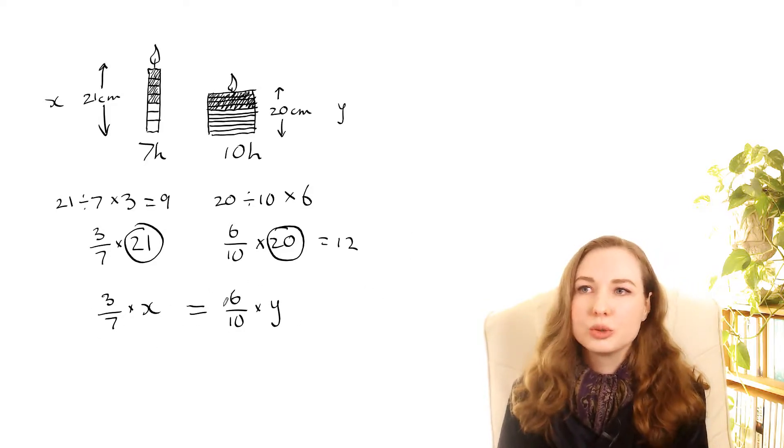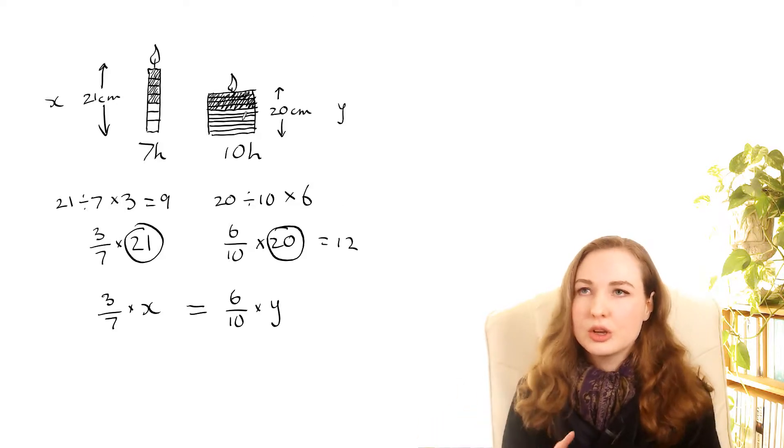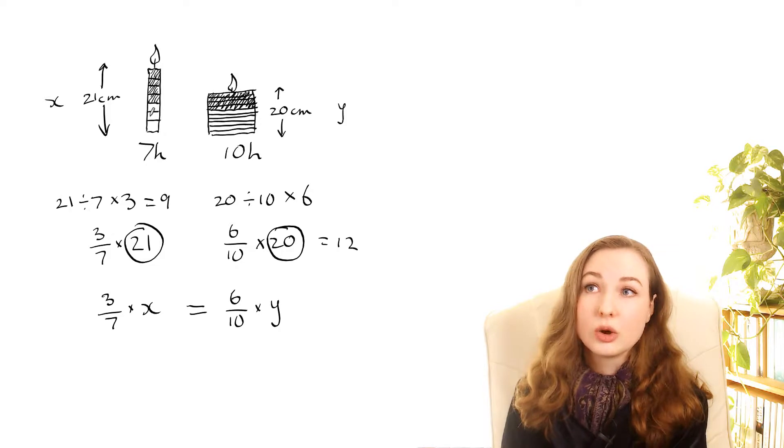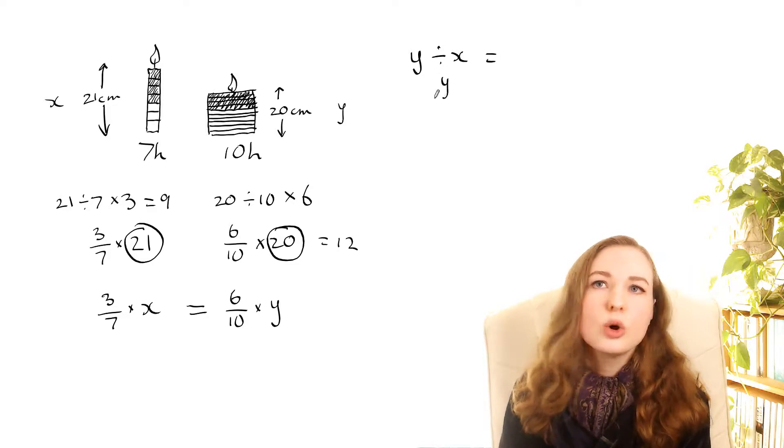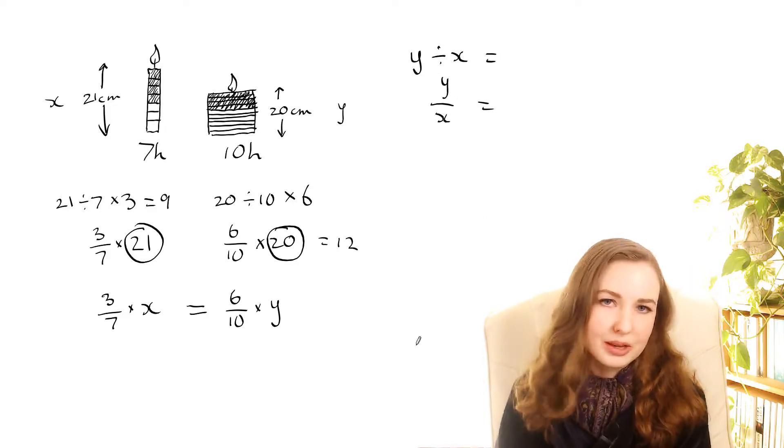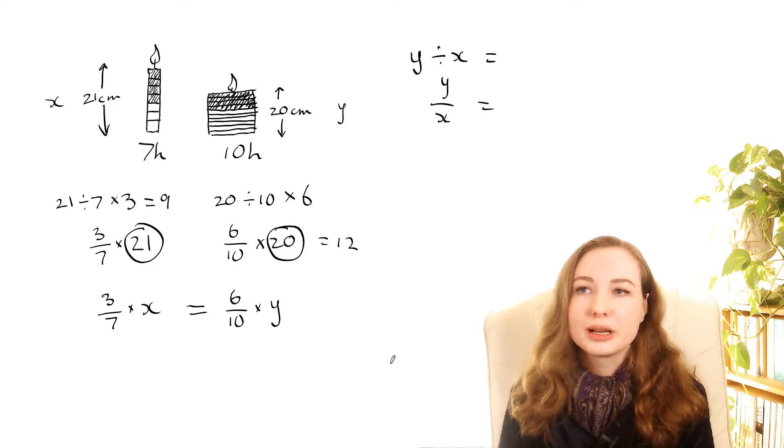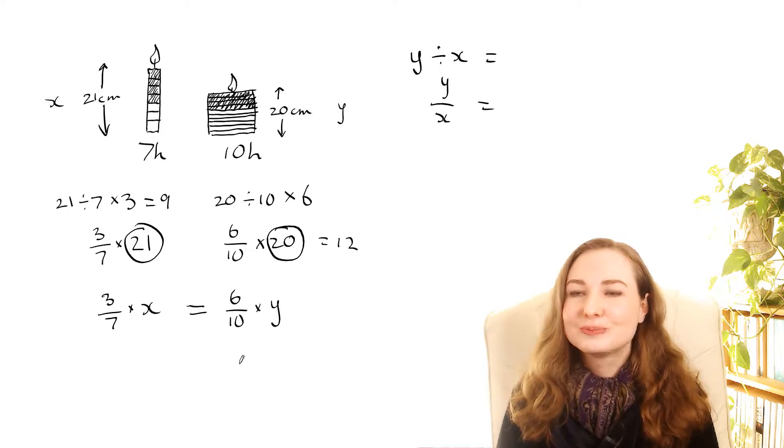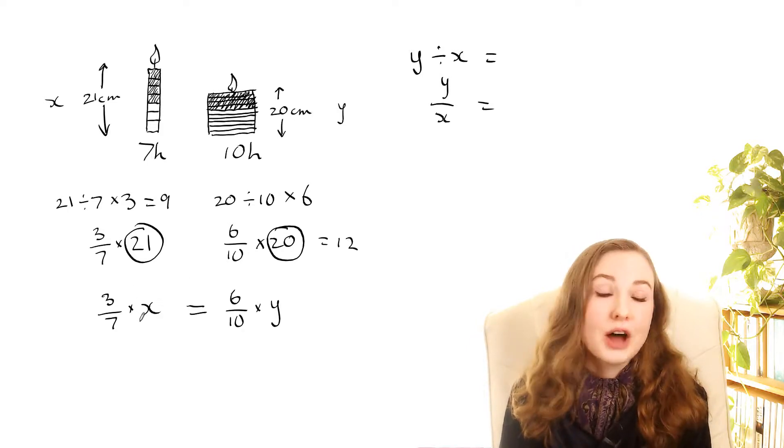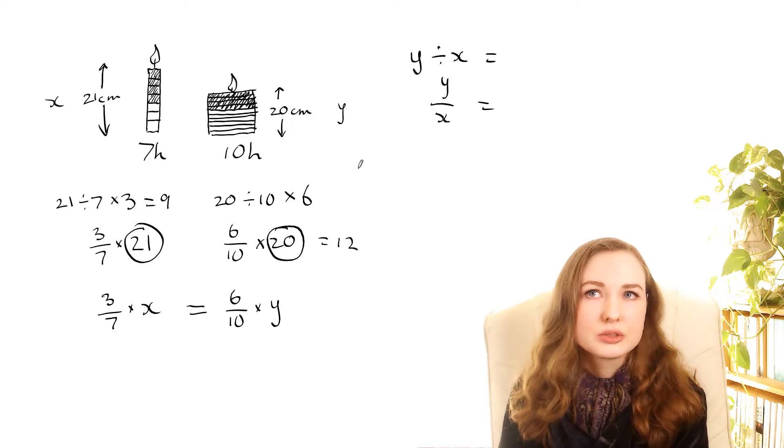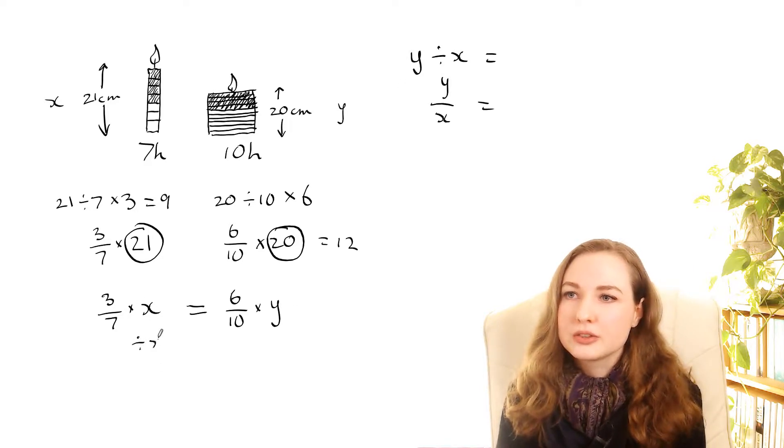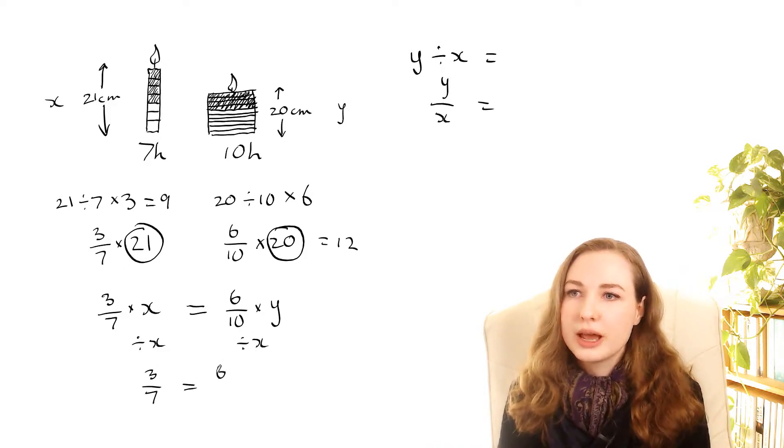Okay so now let's see what we can do with this. We're trying to work out the short candle's height divided by the long candle's height. So what we want to end up with is y divided by x equals something or y over x equals something. Same thing. So let's see what we can do with this to turn it into something like this. So what I'm thinking is if we divide both sides by x that'll move it over here and we'll have y divided by x. So that's really good because that's what we want. So let's do that. So just divide both sides by x and then on the left we've still got 3 over 7 and then on the right we've got 6 over 10 times y divided by x.